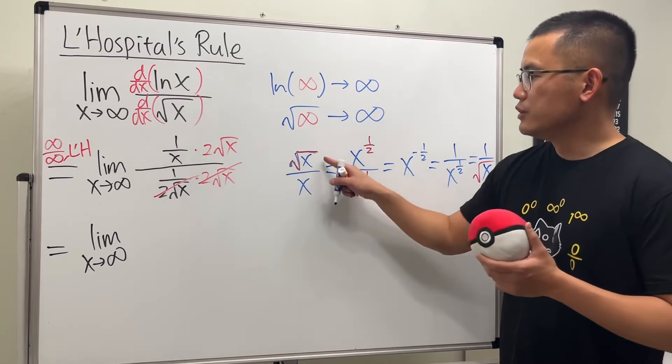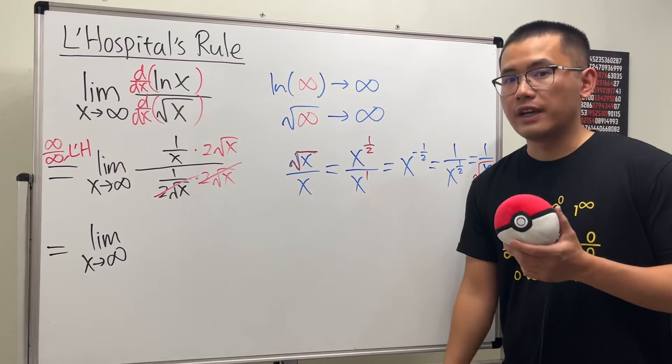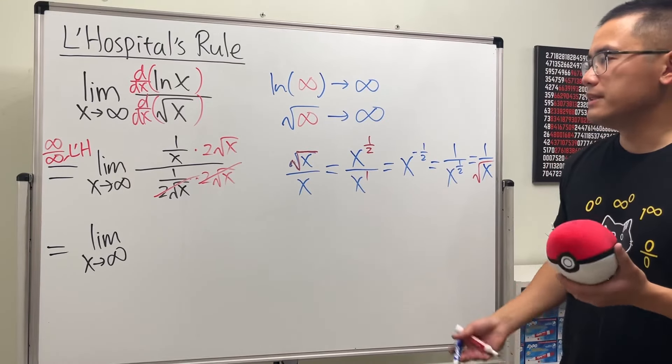Or another way to do this is just multiply the top and bottom by square root of x. So really depends how you want to simplify that.